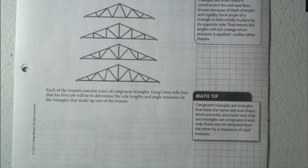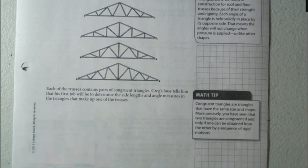Math tip: congruent triangles are triangles that have the same size and shape. More precisely, you have seen that two triangles are congruent if and only if one can be obtained from the other by a sequence of rigid motions.